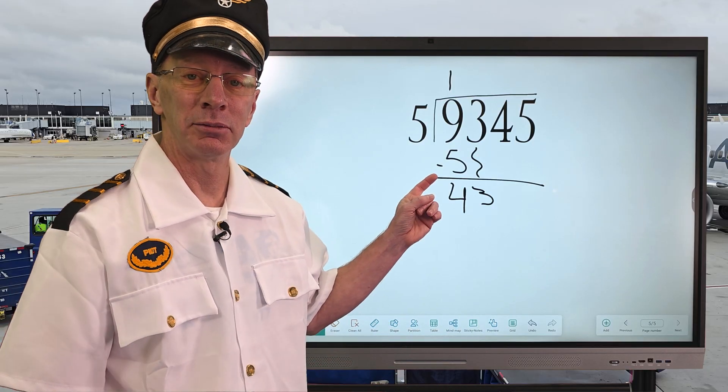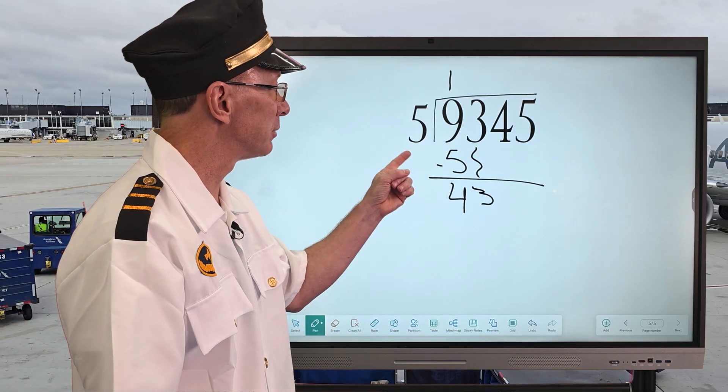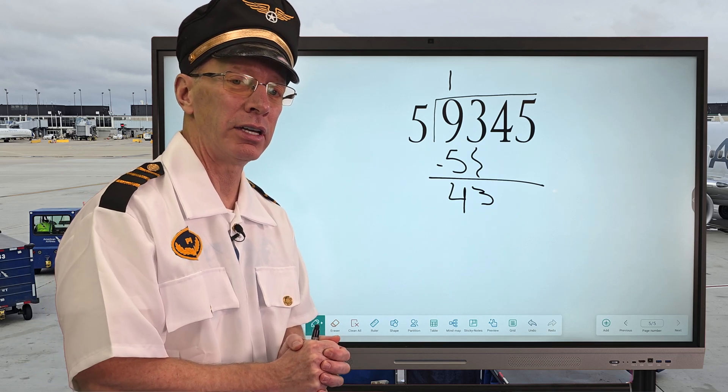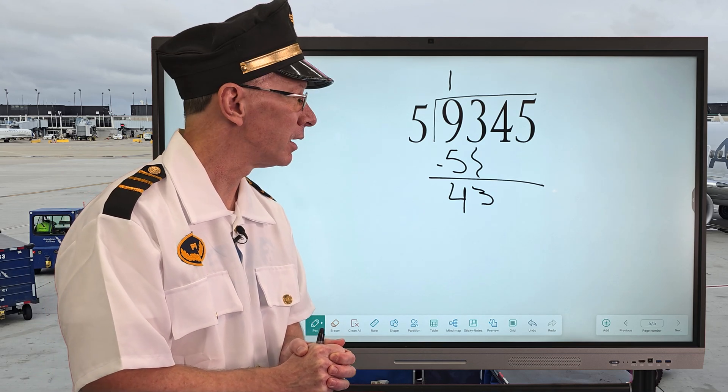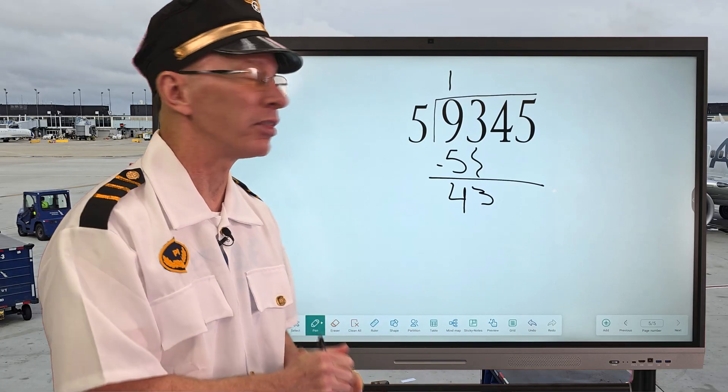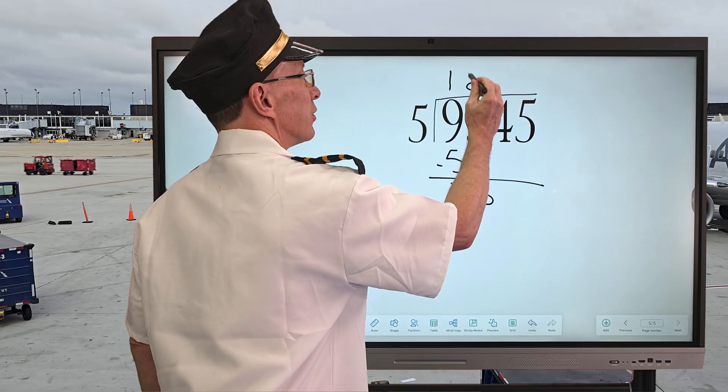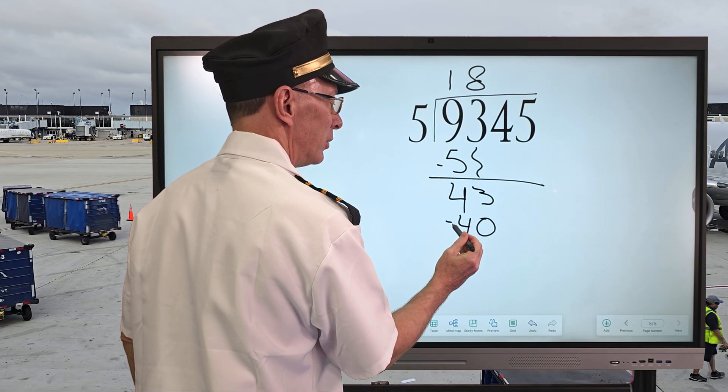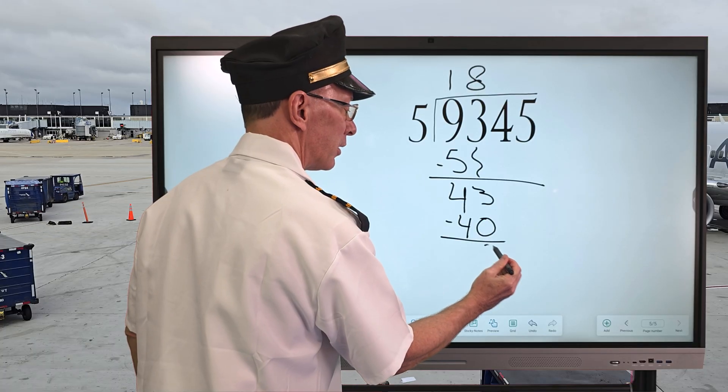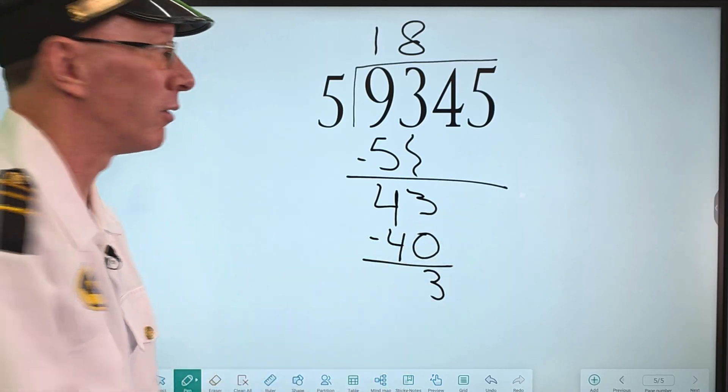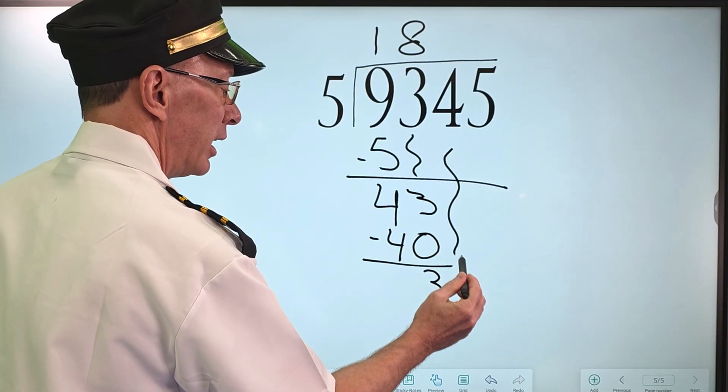And again, we start the whole process over. How many times could I put 5 into 43? I know 8 times 5 equals 40, and 5 times 9 would be 45, which is too big. So let's stay with 8. 8 is great. So 8 times 5 would be 40. Then we subtract. Put the 3 right there. 3 minus 0 is 3. And then we bring down the next number, which would be a 4.